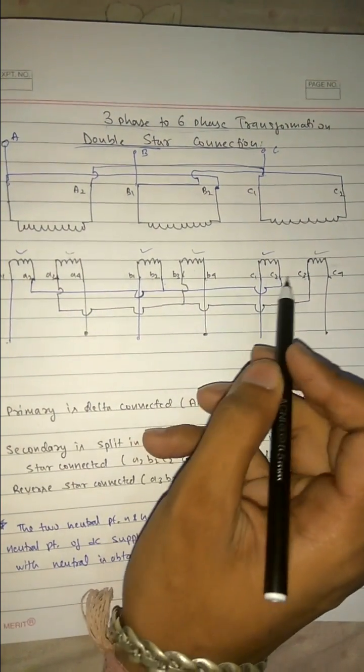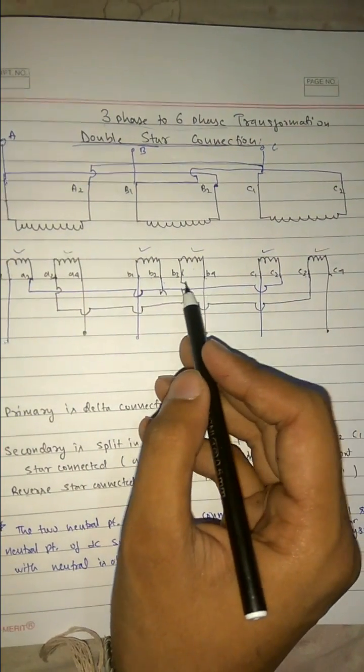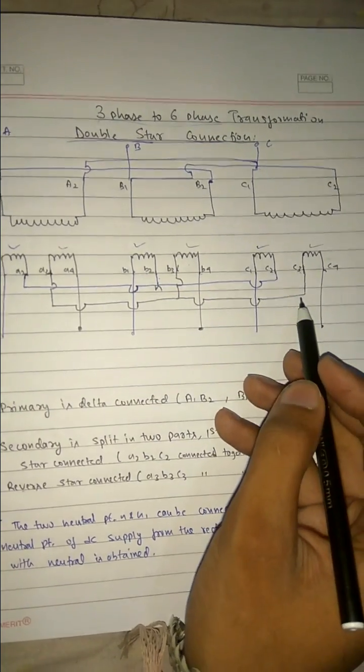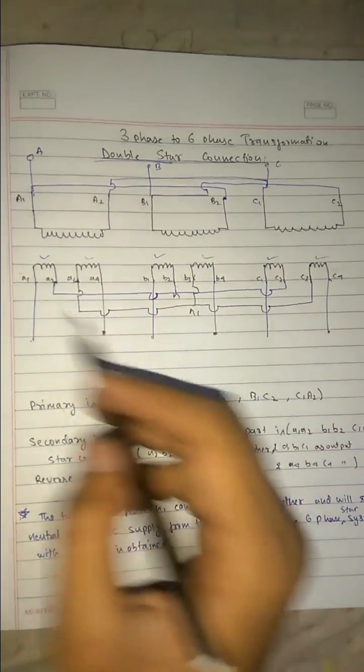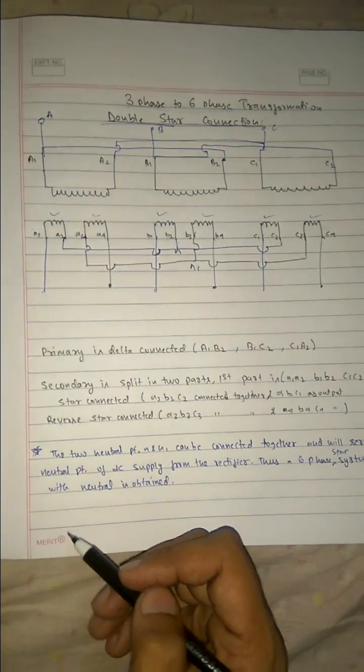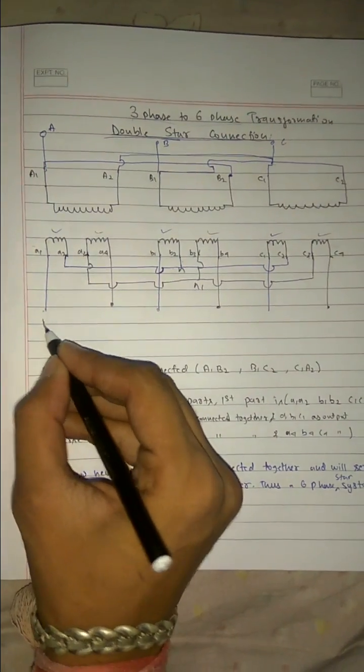So the first one we have got the neutral point: a2, b2, and c2, this is our neutral point. And for the second one: a3, b3, and c3, this is our n1. So 2 neutral points. This is star connected. So in this way we have got 6 terminals.